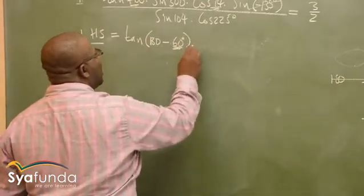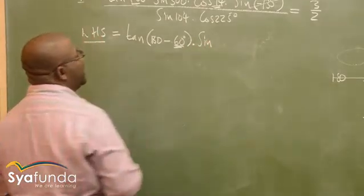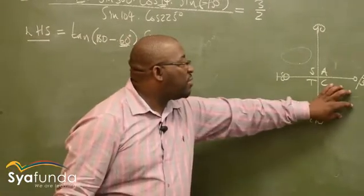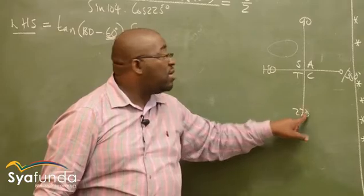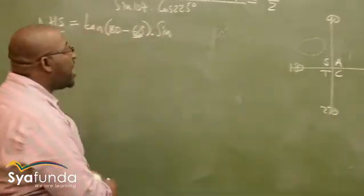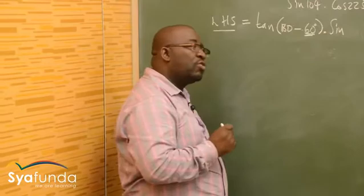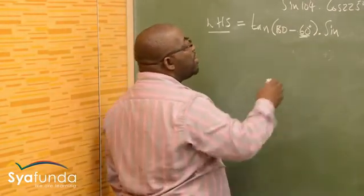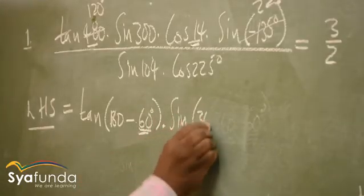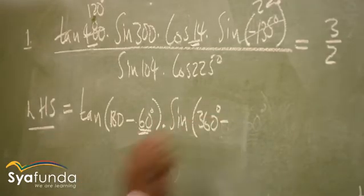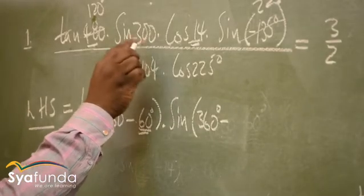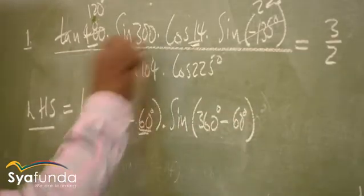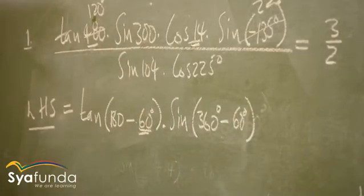This is times sine 300. Now, what is 300? It will be in the fourth quadrant — between 270 and 360 — using 360 minus. Let's try 360 first before we use 270, because using 90 or 270 will change the ratio. This gives us 360 degrees minus 60, which gives us 300.